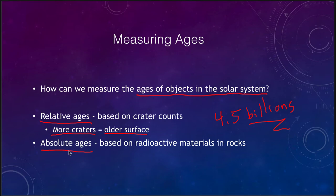The absolute ages are based on radioactive materials and radioactive decay. The way radioactive material decays is in a very predictable manner, and we can use that to figure out the exact age of a sample of a rock and how long it has been since that rock solidified from molten lava. So let's look at these in a little bit more detail.